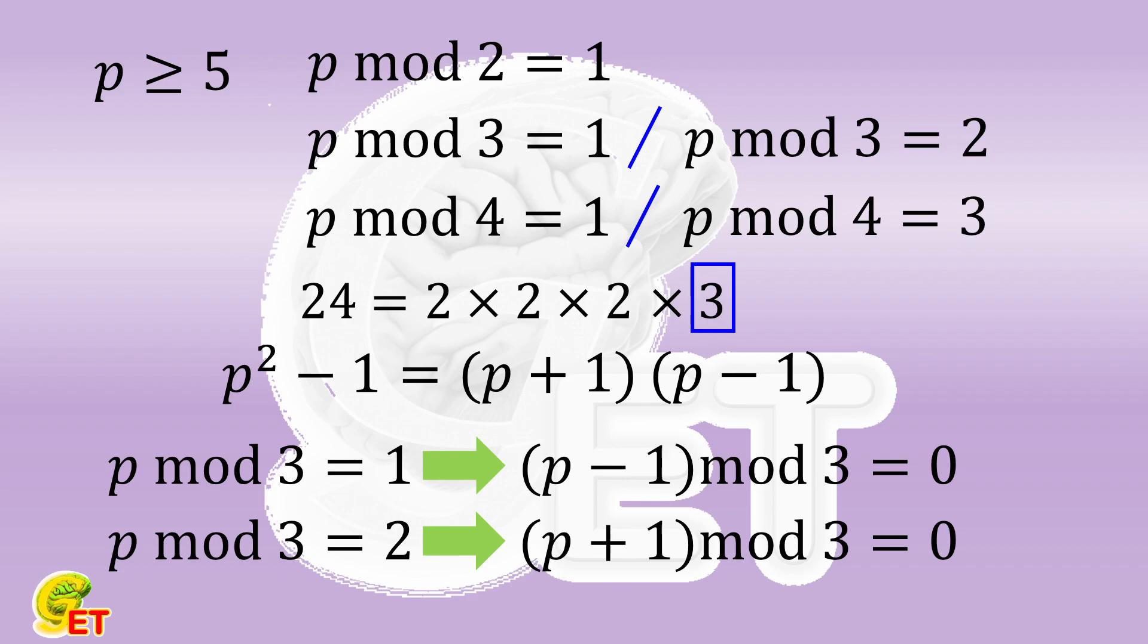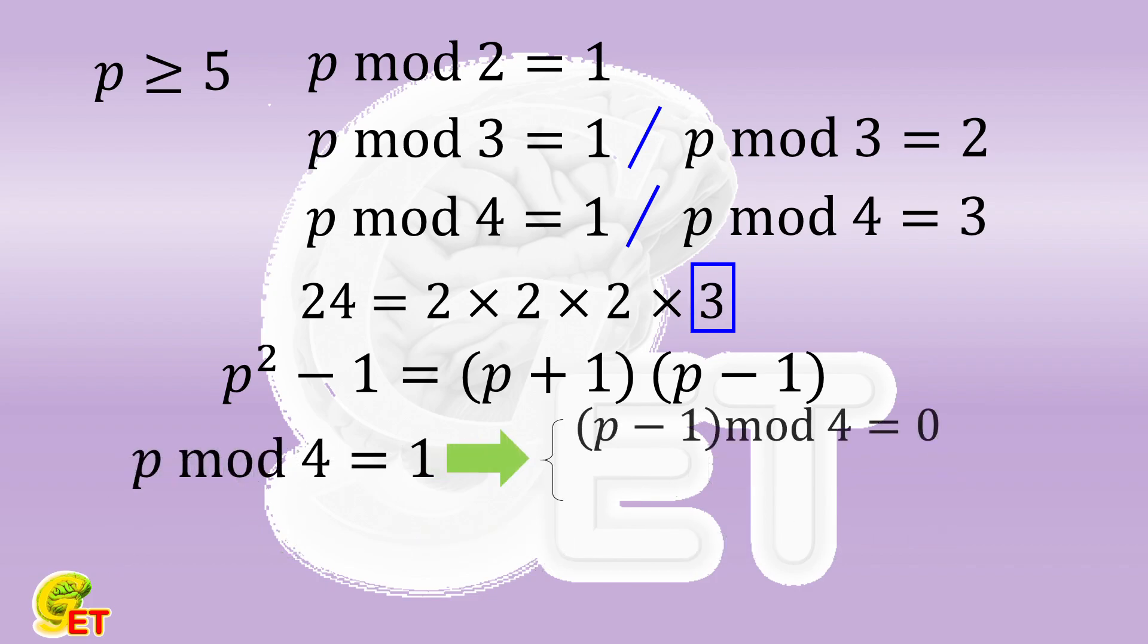Then let's look at the 3 factors of 2. If the remainder of p divided by 4 is 1, then p minus 1 is divisible by 4 and p plus 1 is divisible by 2.